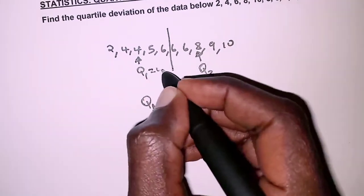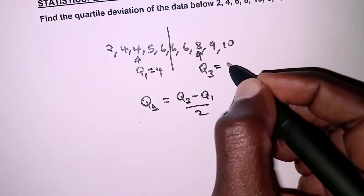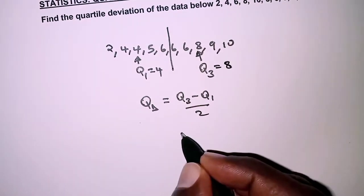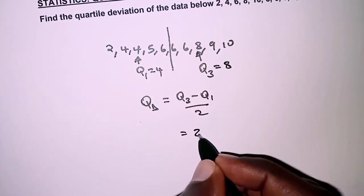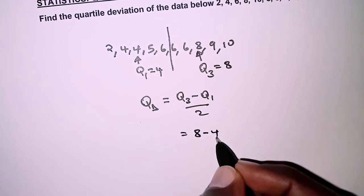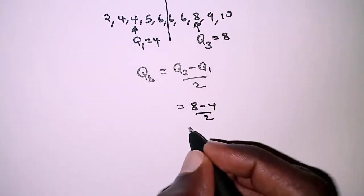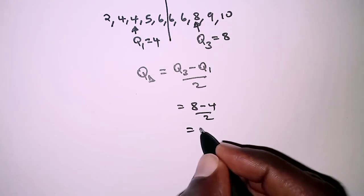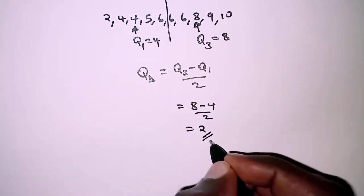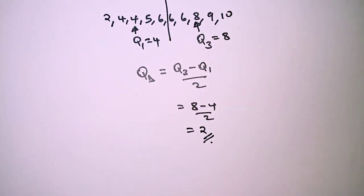As we have seen, Q1 is 4 and Q3 is 8. Therefore we are simply going to have 8 minus 4 divided by 2. So this should give us, that is 4 over 2, and that is 2.